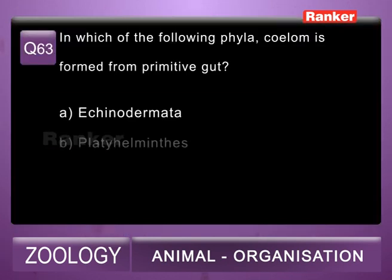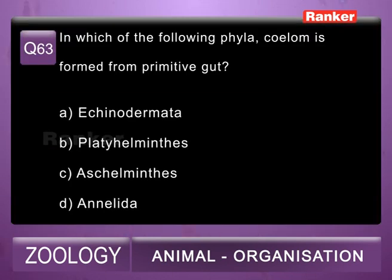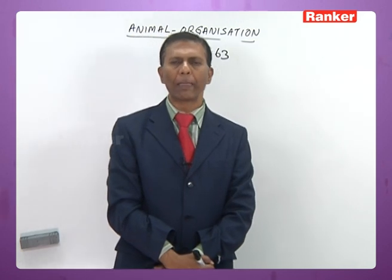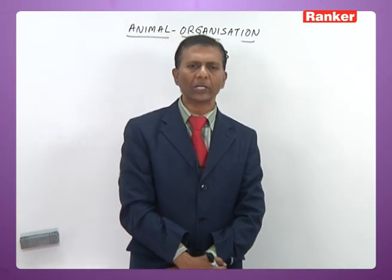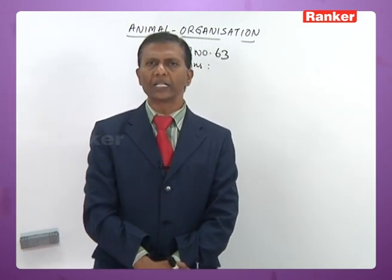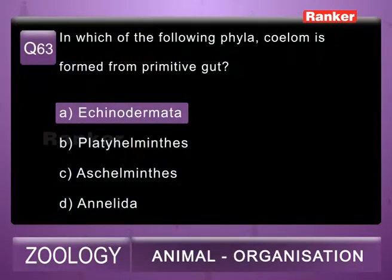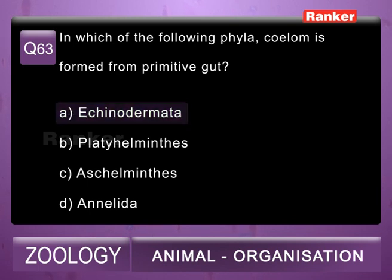Question 63: in which of the following phyla is the coelom formed from the primitive gut? A) Echinodermata, B) Platyhelminthes, C) Aschelminthes, D) Annelida. In Platyhelminthes it is acoelomate, in Aschelminthes it is pseudocoel, in Annelida it is schizocoel. In Echinodermata the coelom arises from the elementary canal — that is why it is called enterocoel. So the 63rd question correct answer is A, Echinodermata.